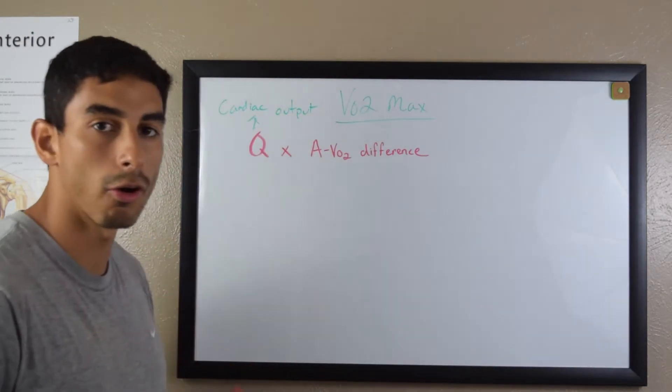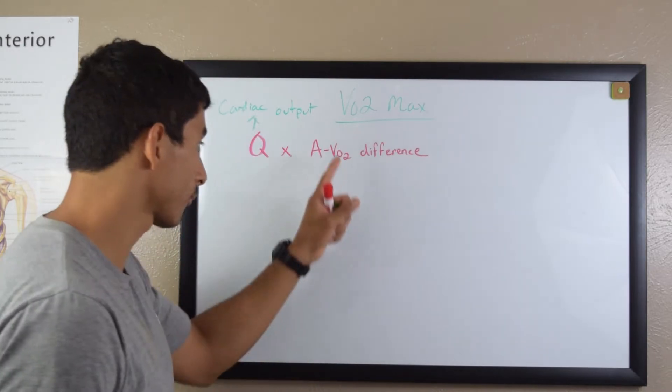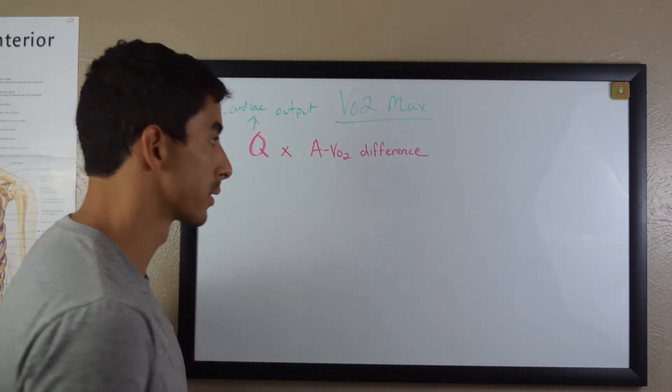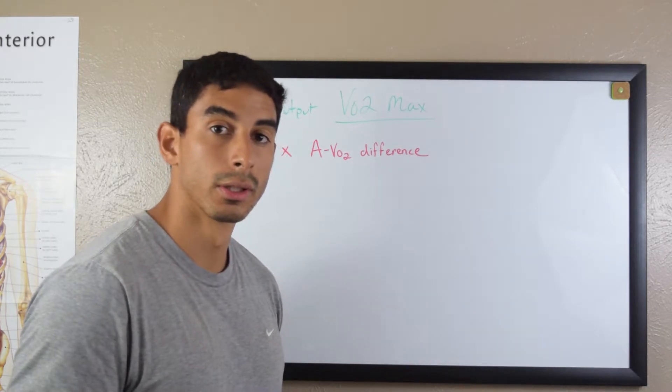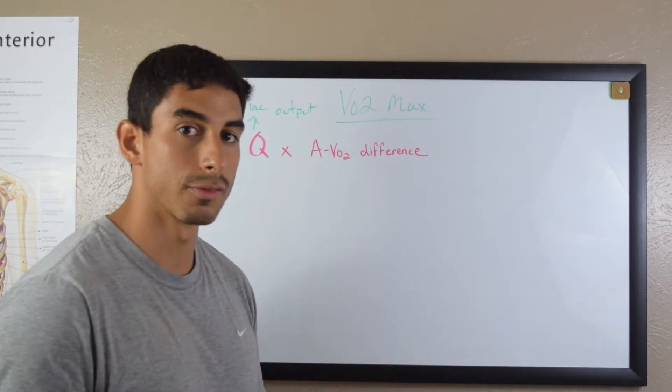That's the amount of blood your heart pumps in one minute and then you have AVO2 difference. This is the difference in the amount of oxygen in the arteries versus the veins.